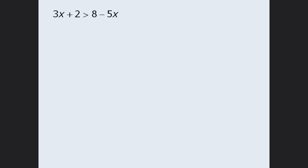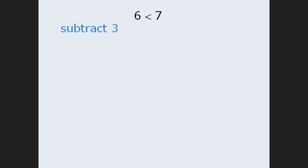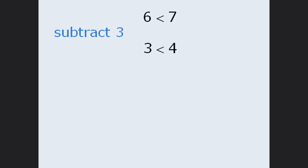Before we can do this, let's first make some observations regarding the ways in which inequalities behave. Take the inequality 6 is less than 7. You will find that this inequality behaves similar to the way equations behave. Let's take this inequality and subtract 3 from both sides. When we do this, we get 3 is less than 4, so the inequality remains intact when we subtract 3 from both sides.